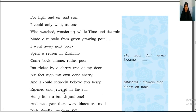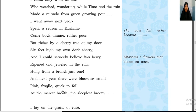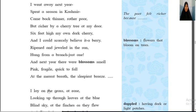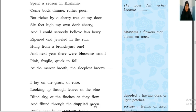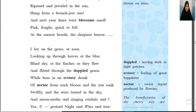So the colors mentioned are: 'jeweled in the sun' for the berry's color, 'pink and fragile' for the flower color — pink color flower. Then 'blue blind sky' — blue color of the sky is also mentioned. And 'dappled green' — 'flitted through the dappled green' — here the cherry tree is mentioned with the dappled green color.